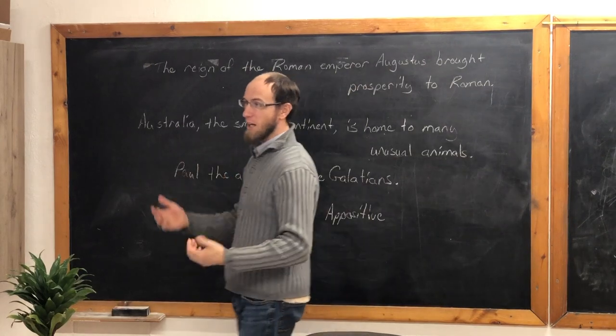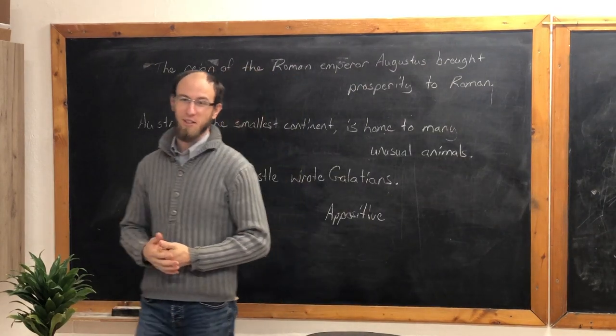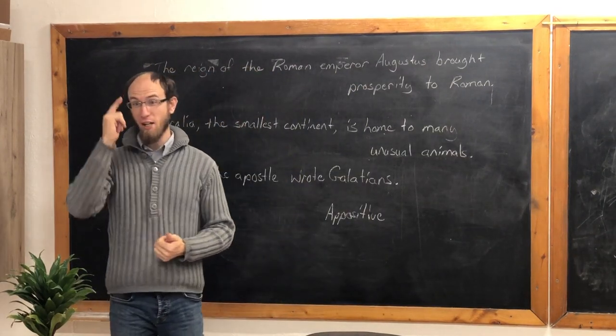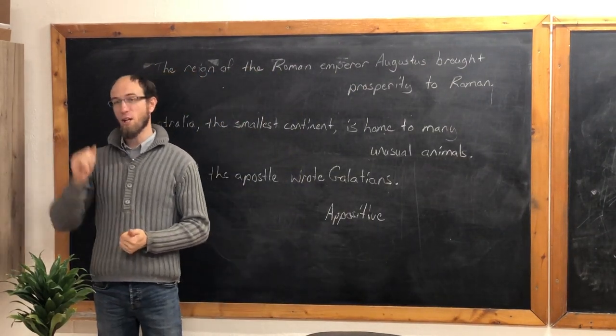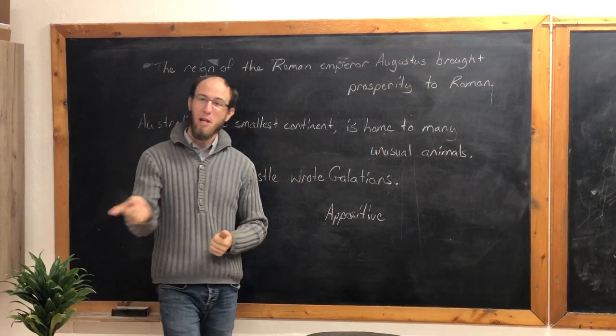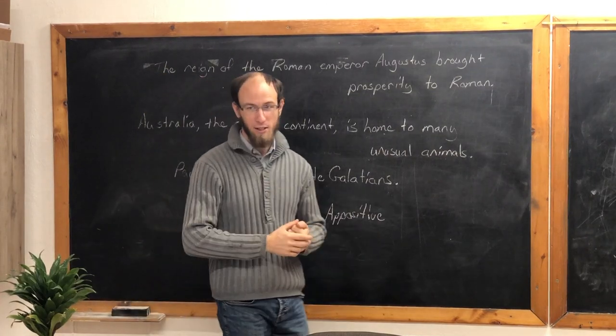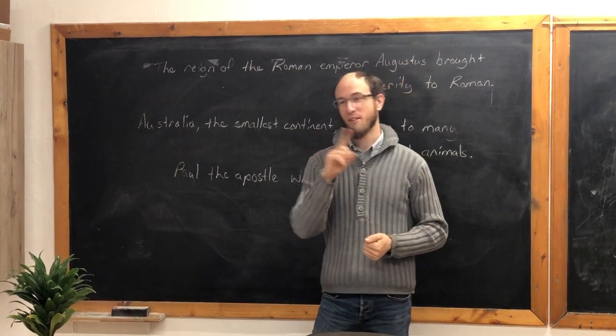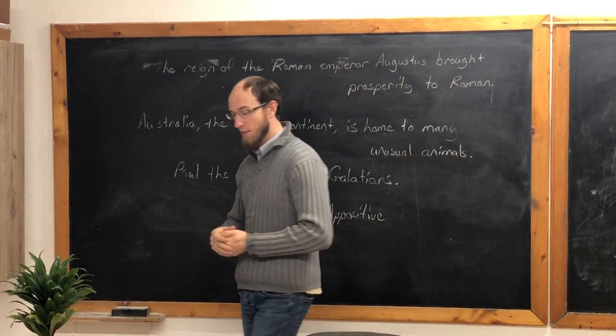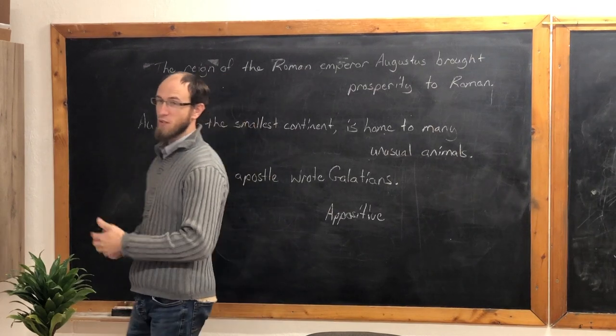Mother baked a pie. Pie — and it is a direct object. Mother baked me a pie. Pie is the direct object, and me is the indirect object. And those are with action verbs.